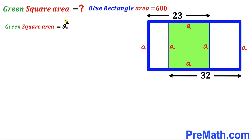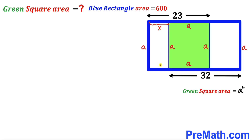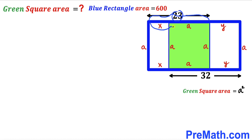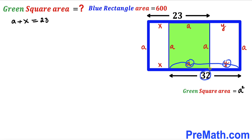In our next step, we label the left-hand side segment as lowercase x, so the corresponding segment on the other side is also x. Similarly, we label the bottom segment as y, so the corresponding segment is y as well. We observe that the whole horizontal segment of 23 units equals a plus x, giving us a + x = 23. Likewise, the horizontal length of 32 units gives us a + y = 32.